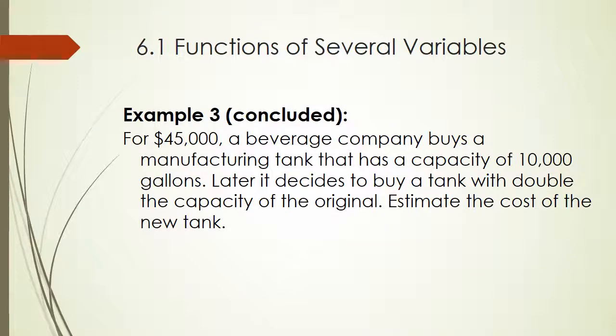So we have, for $45,000, a beverage company buys a manufacturing tank that has a capacity of 10,000 gallons. Later, it decides to buy a tank with double the capacity, estimate the cost of the new tank. So we have the original cost. We have the original capacity. The new capacity is going to be, or the new volume is going to be double that, or $20,000. Using the formula from the previous slide, pause the recording, give this a try and resume to check your answer.